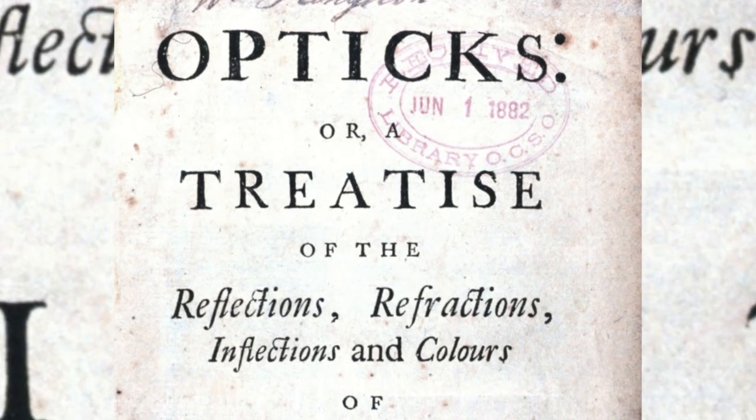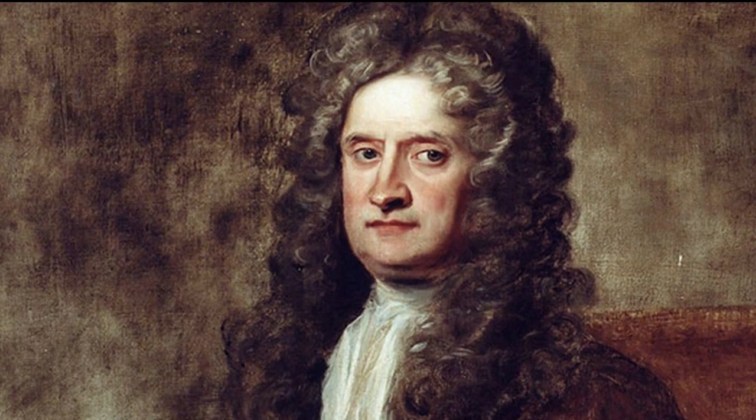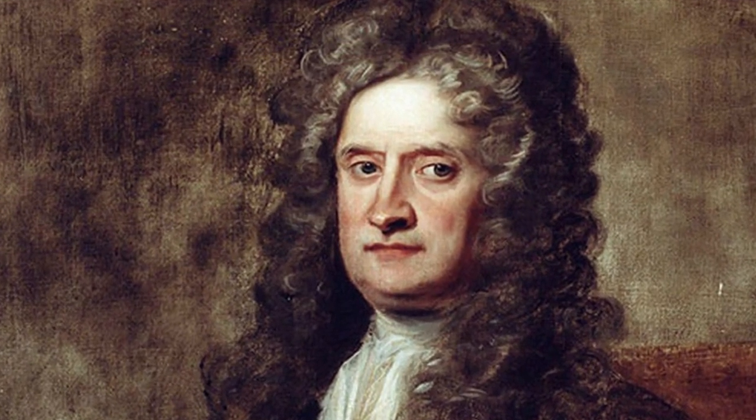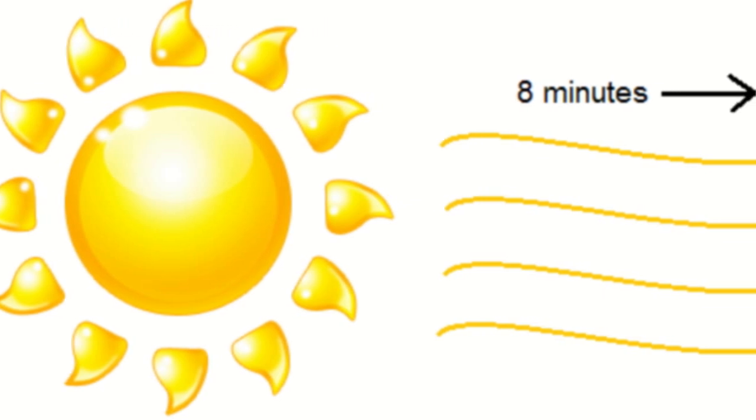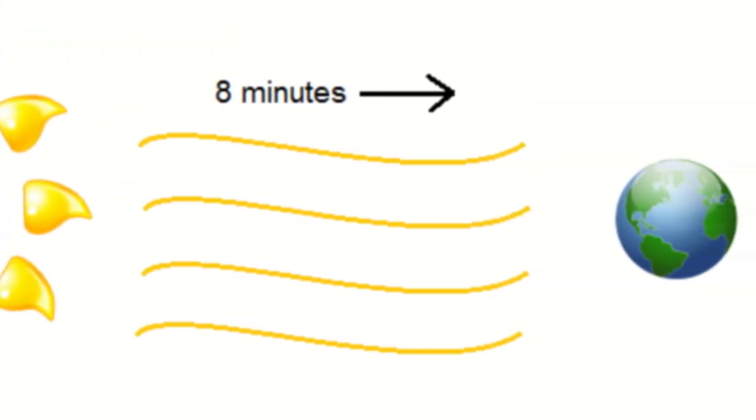Isaac Newton published Romer's work in his 1704 work, Optics. He deduced an estimate of 7 to 8 minutes required for light to travel from the Sun to the Earth. This was a close approximation, considering the most accurate modern measurement puts the time at 8 minutes and 17 seconds.